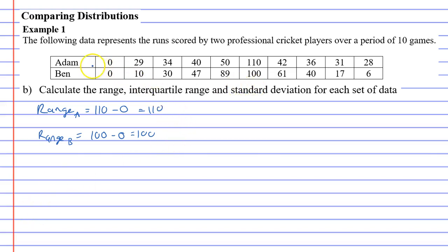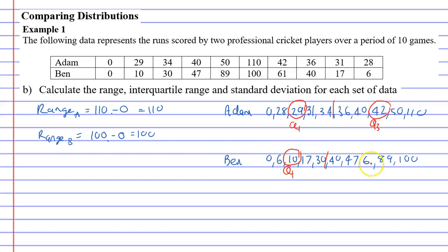So I'm going to write the numbers down again in order. I'm going to pause and then press play. Alright, I'm back. I've put the numbers in order and I've even labelled where the middle or the median is. So we need to find quartile 1 and quartile 3. So quartile 1 is 29 and quartile 3 is 42 for Adam. And for Ben, quartile 1 is 10. I've just noticed the 1 has gone from the 6. This is 61. So the quartile 3 would be 61 for Ben.